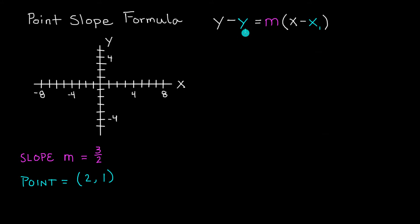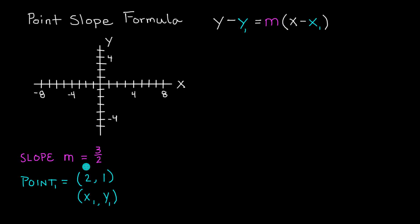This right here is the point-slope formula and we simply take the slope and plug it in where our slope m is. So m in our case is 3 over 2, and y1 and x1 are the x and y coordinates of our point. If we think of this as point 1, then the 2 would be our x1 and the 1 would be our y1.